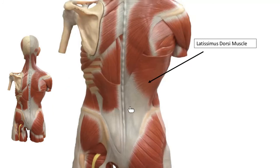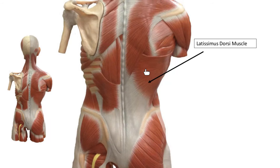Here you can see the latissimus dorsi muscle — commonly known as the lats, but don't write that as an answer. This muscle is very well developed in people who do pull-ups, butterfly stroke swimmers, and rowers. It has a lot to do with that rowing motion — pulling things into your body.